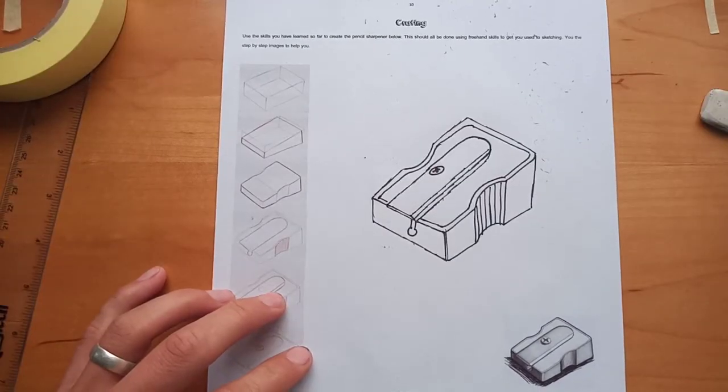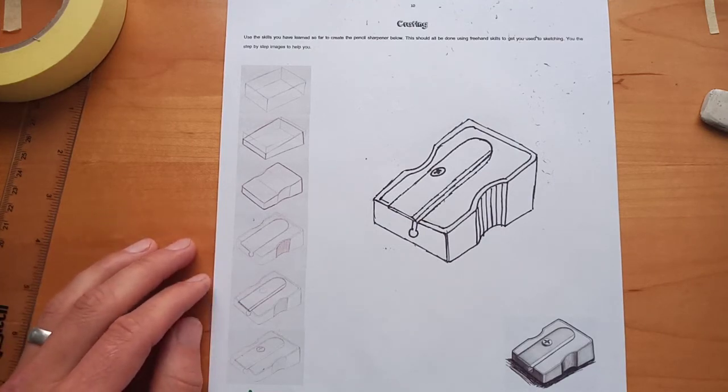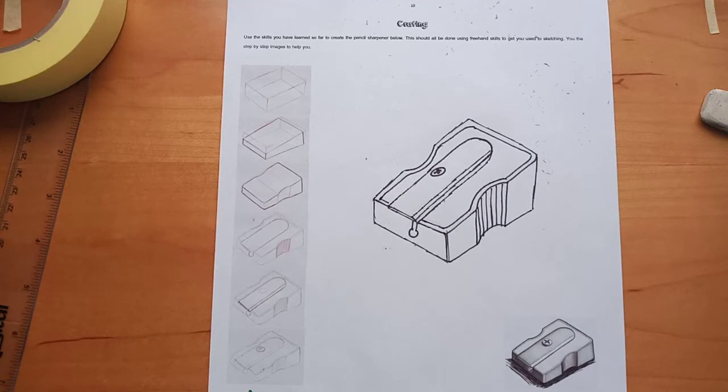So, once you've gone over it with a fine liner, you can see you're starting to get the build up of the shape. And then, from there, you can add a bit of colour. Now, I've done this quite quickly. But, it will work for basically any shape you want crating as a technique.